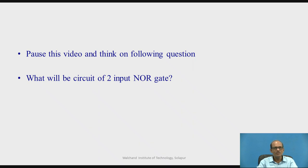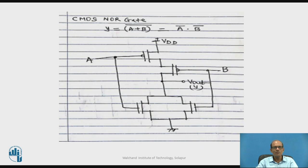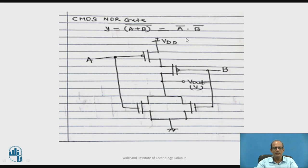Now consider the circuit for a two-input NOR gate. For the NOR gate, two P-MOSFETs are connected in series in the upper network, and from the output to ground, two NMOSFETs are connected in parallel. The inputs are A and B, with VDD and VSS. Y equals A plus B bar, which by De Morgan's theorem equals A bar times B bar. This is the circuit for the two-input NOR gate.